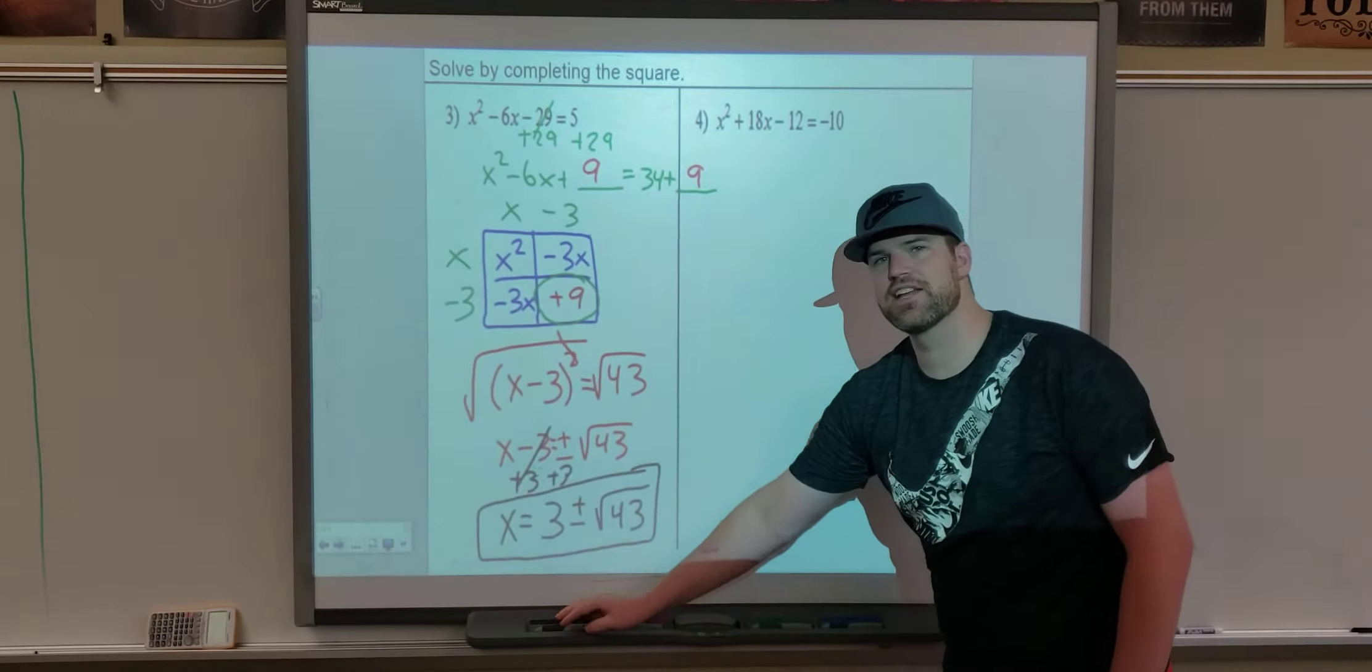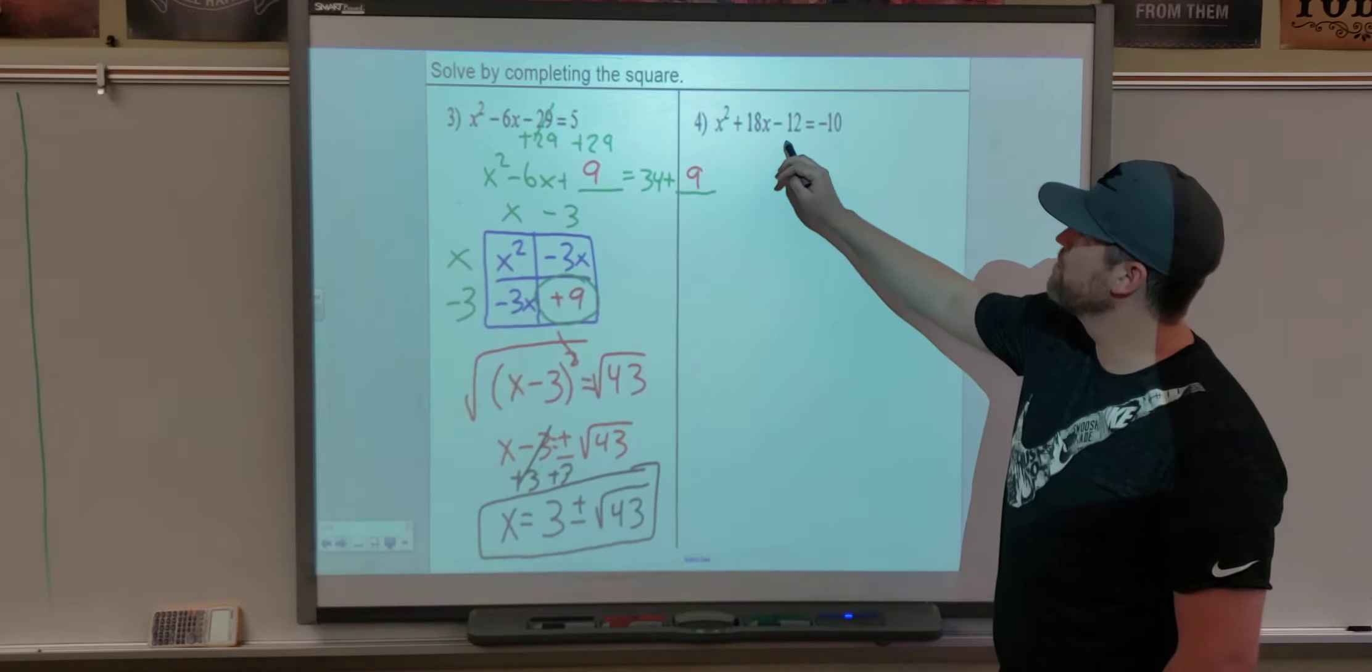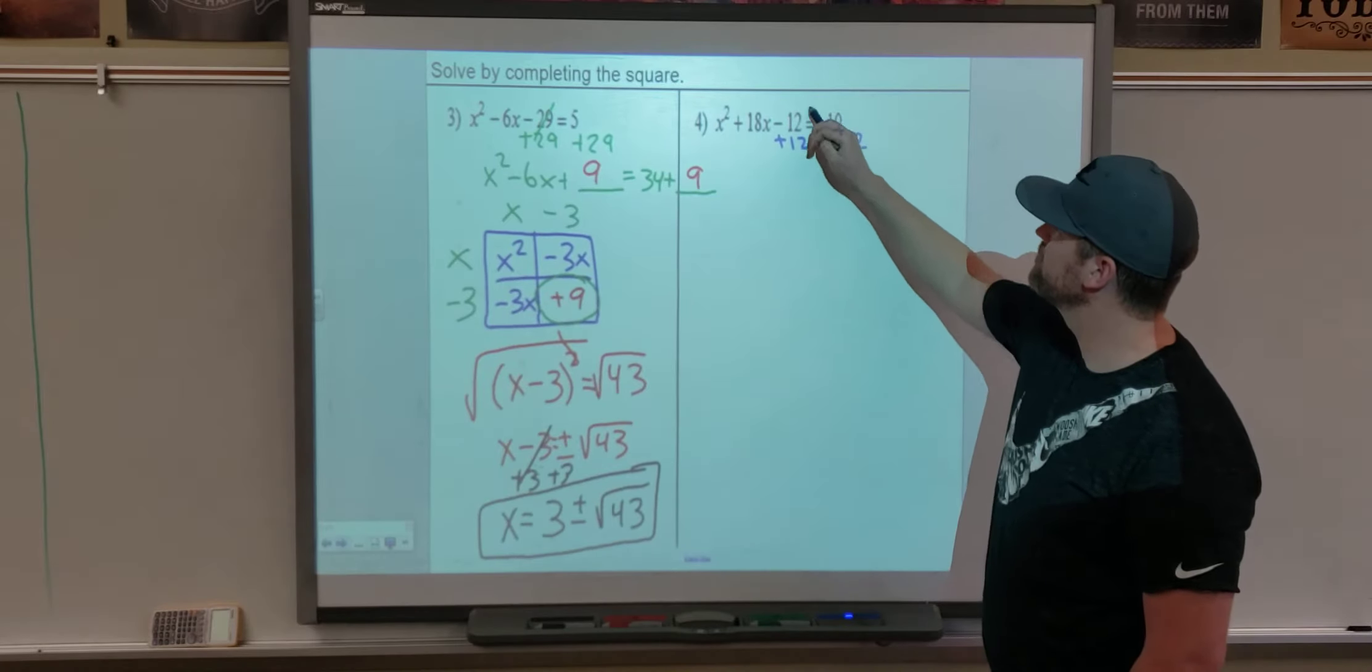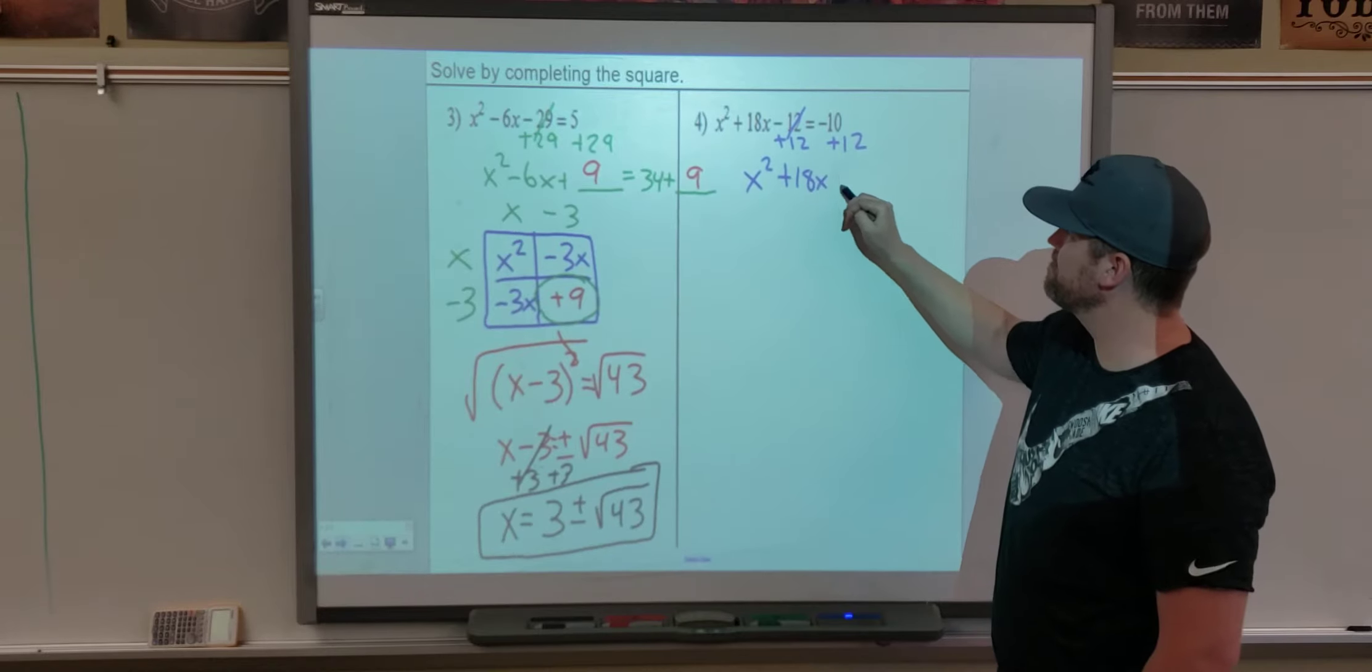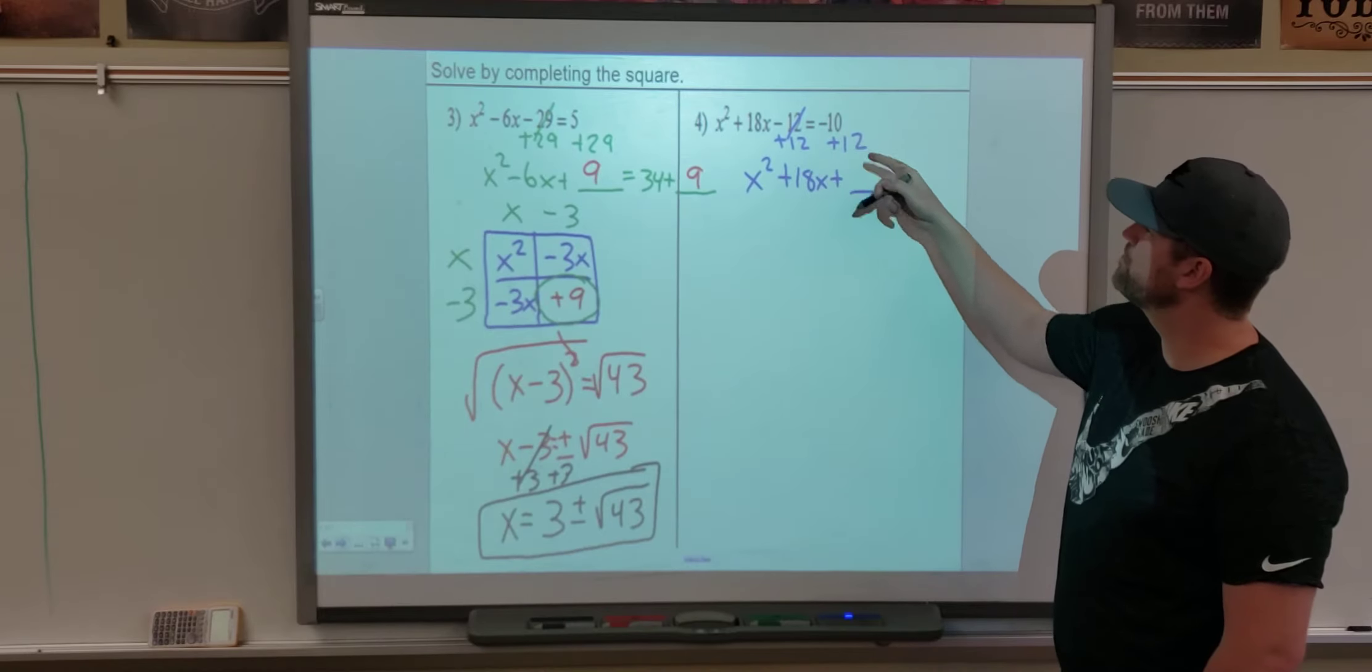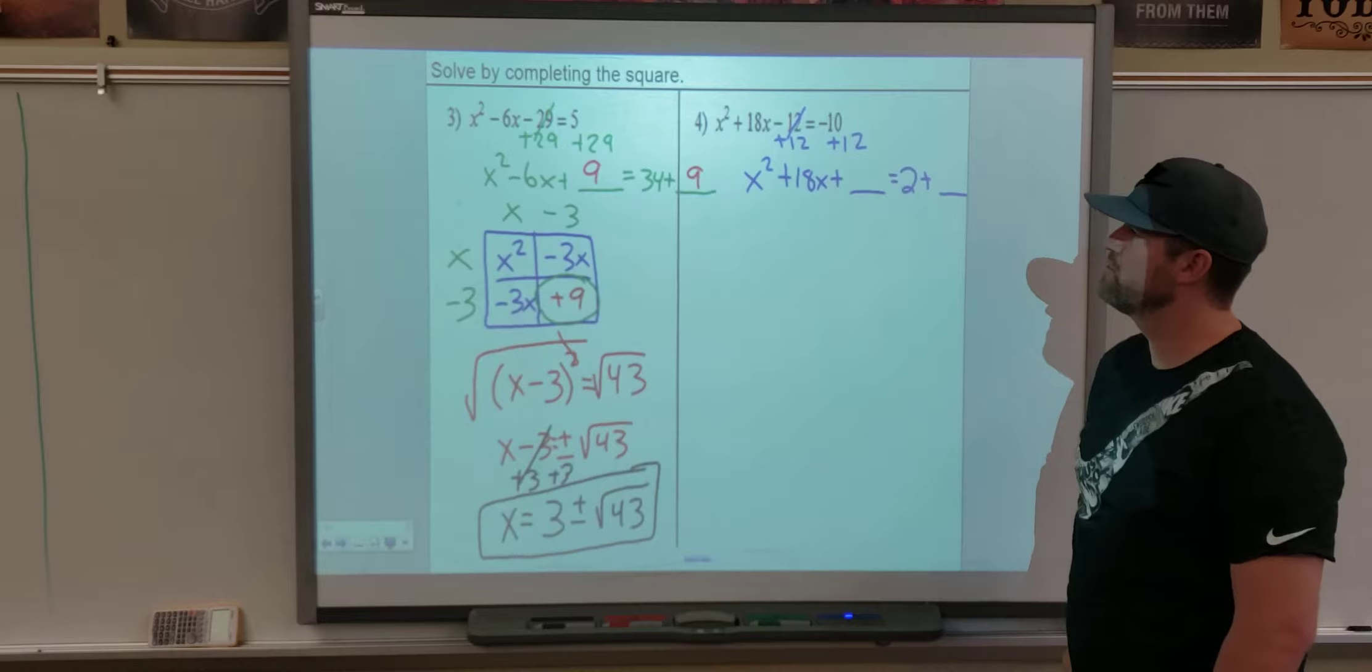All right, hopefully you're starting to get the hang of this. Our next problem, same thing, we want to make this 0. So I'm going to add 12 to both sides, which gives us x squared plus 18x plus our unknown term equals negative 10 plus 12, which is 2, plus our unknown term.